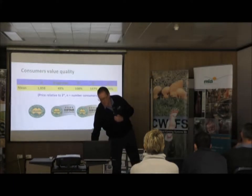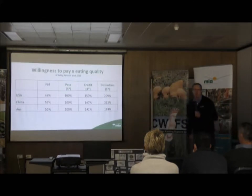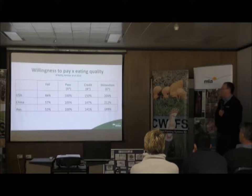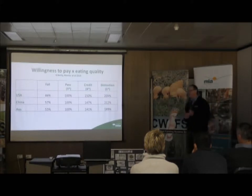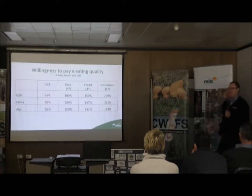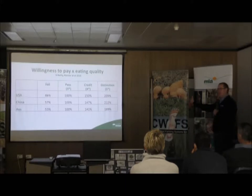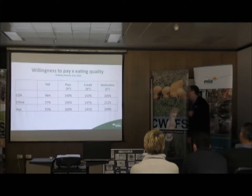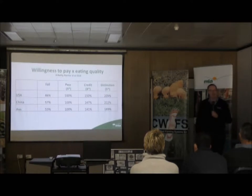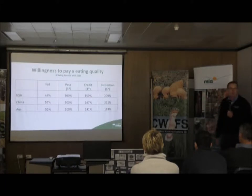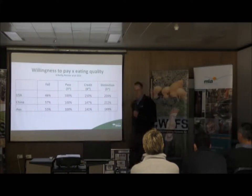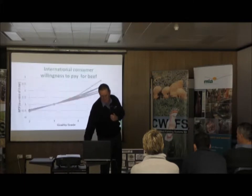Taking that concept more broadly, work done last year through the Sheep Cooperative Research Centre across the USA, China, and Australia — 720 consumers in each country, over 2,000 total — eating samples ranging from lamb out to four-tooth. The results were exactly the same: willing to pay about half if it doesn't meet basic eating quality, about one and a half times for four star, and about double for five star. Very consistent across countries.